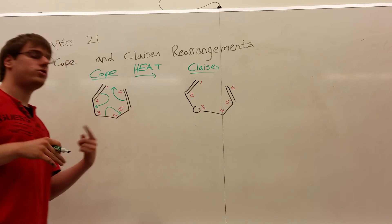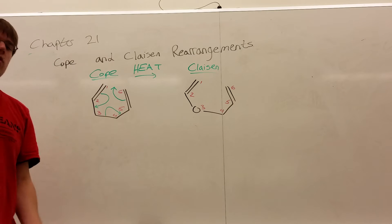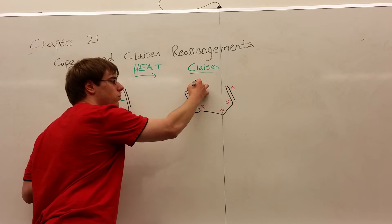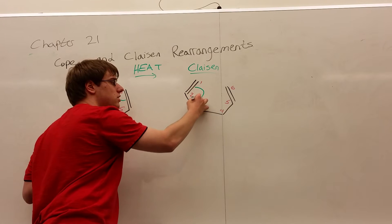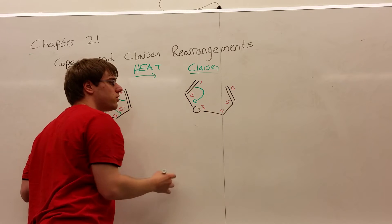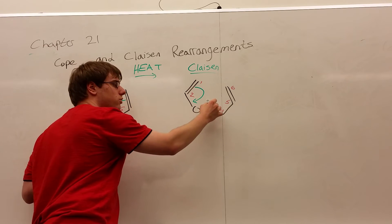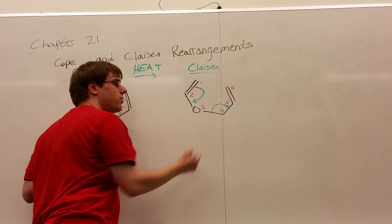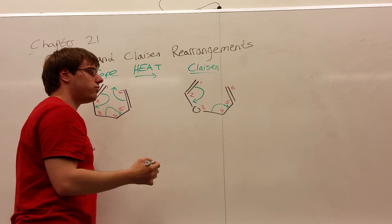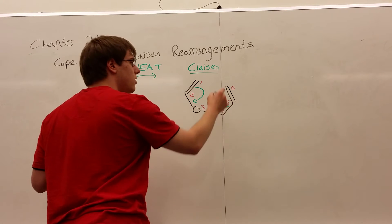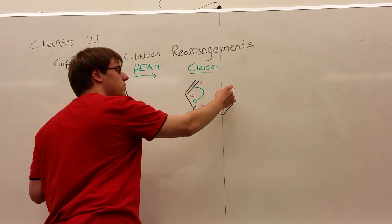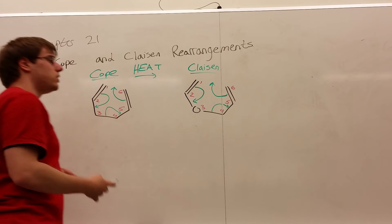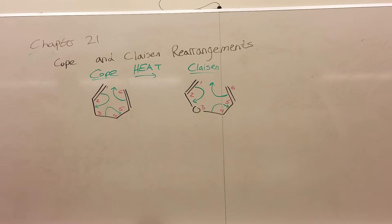And the arrows are exactly the same for the Claisen. Start from the bond between one and two, and bring it to the bond between two and three. Start from the bond between three and four, and bring it directly to the bond between four and five. Finally, start from the bond between five and six, and bring it to the space between one and six.